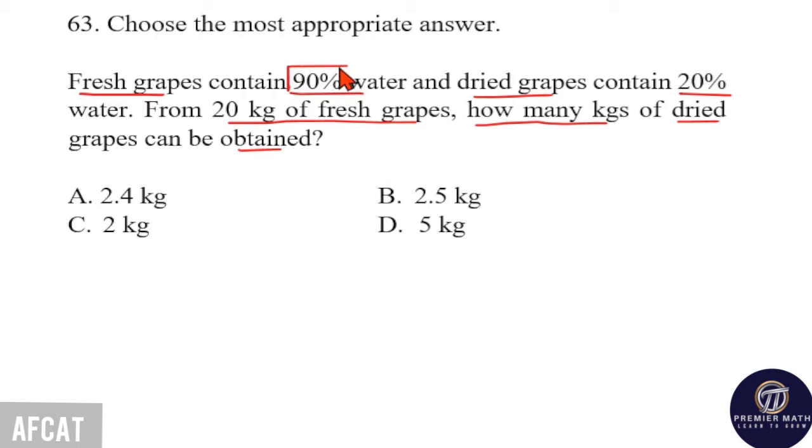Here, fresh grapes contain 90% water means remaining 10% is the pulp. So, we need to find out how many kilograms of dried grapes can be obtained from 20 kg of fresh grapes. Here, this 20 kg of fresh grapes contain 90% water and 10% pulp.